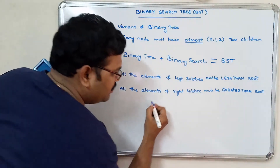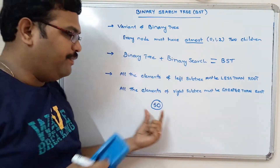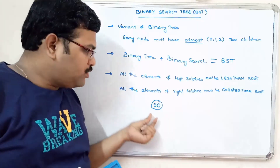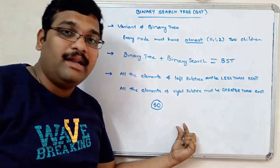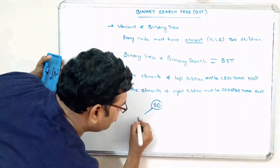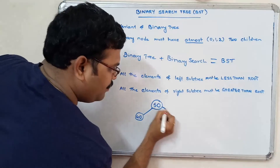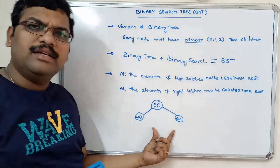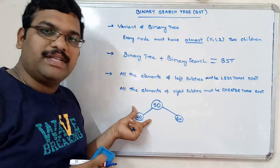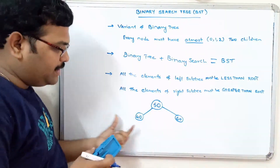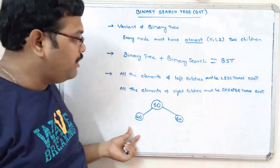For example, consider 50 as the root node. The left subtree should contain elements less than 50 and the right subtree should contain elements greater than 50. So we can place 40 on the left and 60 on the right. This is a valid BST because node 50 has values less than it on the left and greater on the right.